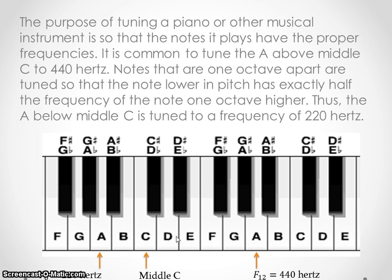It starts at A, B, C, D, E, F, G. And once it gets back to G, it starts back at A again. So they're just different octaves. All right, so the middle C is right here. What they're saying is typically when you have a piano, you tune the A that falls right above middle C to 440 hertz. And hertz is just a measurement of sound here.